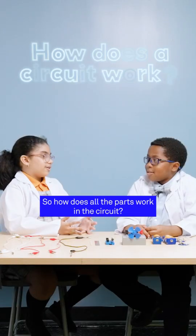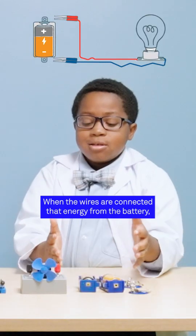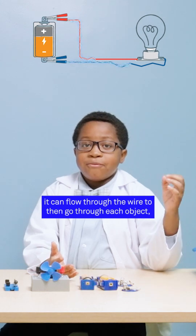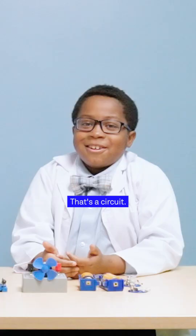So, how does all the parts work in a circuit? When the wires are connected, that energy from the battery can flow through the wire to then go through each object, making them work. That's a circuit.